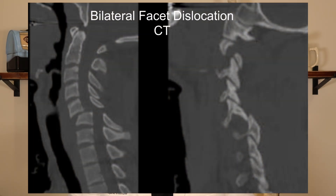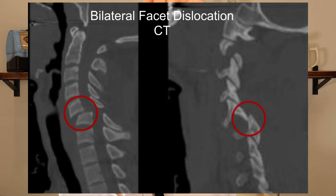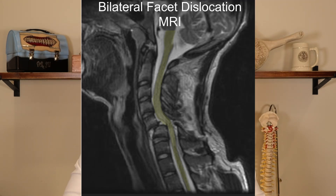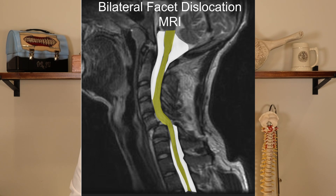Here's a patient with a bilateral facet fracture dislocation who had a spinal cord injury. On CT, one bone is completely translated on top of another, and on the CT of the facets, you can see one facet completely jumped on top of the other. On MRI, you'll see the spinal cord coming down — the white fluid around the cord — with a severe spinal cord injury at the C5-6 level. This patient was taken relatively quickly to surgery.